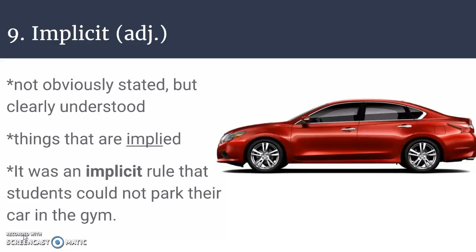Number nine is implicit. Let's make sure we don't get implicit and elicit mixed up with each other. Implicit is something that is implied — the definition is implied or understood though unexpressed. It's not obviously stated, but it is clearly understood. A silly extreme example: it was an implicit rule that students could not park their car in the gym. Nobody's going to write that rule in the student agenda — it is just understood that you do not drive your car into the building.